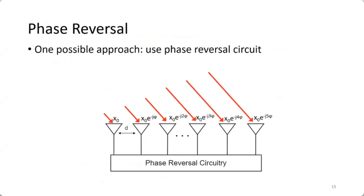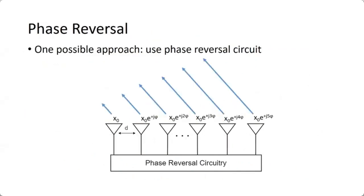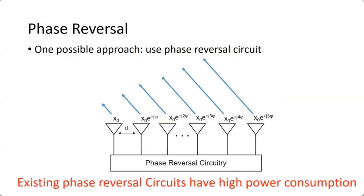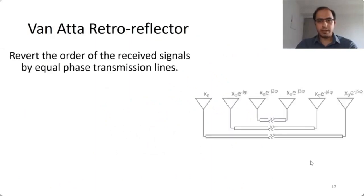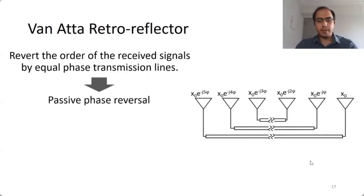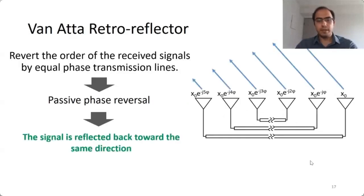One approach is to use a phase reversal circuit, but existing circuits have high power consumption. Our approach instead uses a Van Atta retroreflector. In the Van Atta configuration, each antenna is connected to its mirror through passive equal-phase transmission lines. This reverses the order of signals, implementing passive phase reversal. As a result, the signal is reflected back toward the same direction — exactly how we enable the backscatter node to focus its reflected signal toward an access point without a phased array.